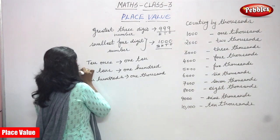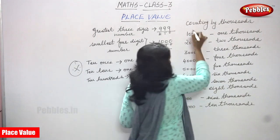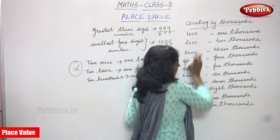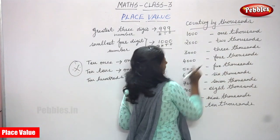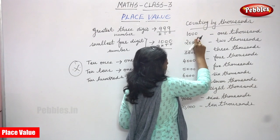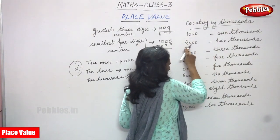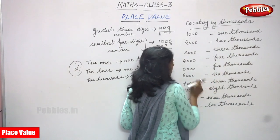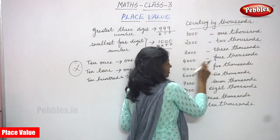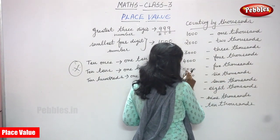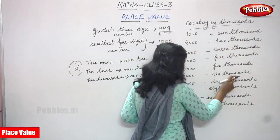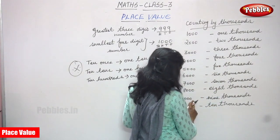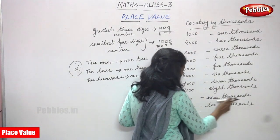Don't forget — you have to memorize it nicely. Next: counting by thousands. One thousand, two thousand — these are numerals; you also write them in words. One thousand is 1000, two thousand is 2000, three thousand is 3000, four thousand is 4000, five thousand is 5000, six thousand is 6000, seven thousand is 7000, eight thousand is 8000, nine thousand is 9000.